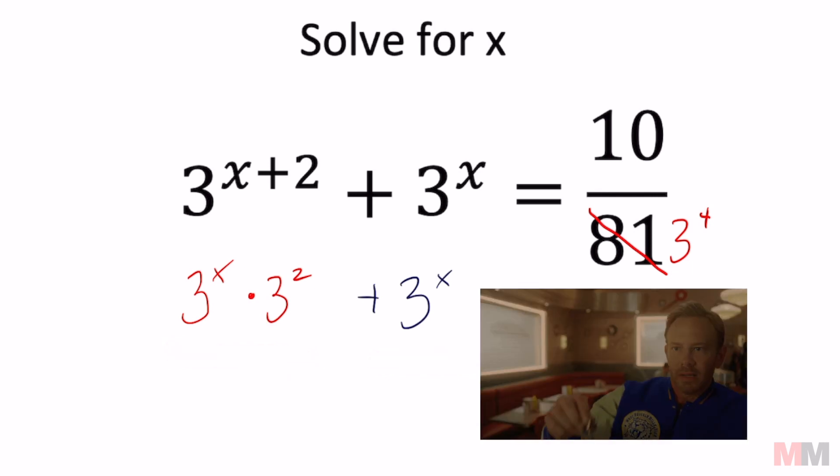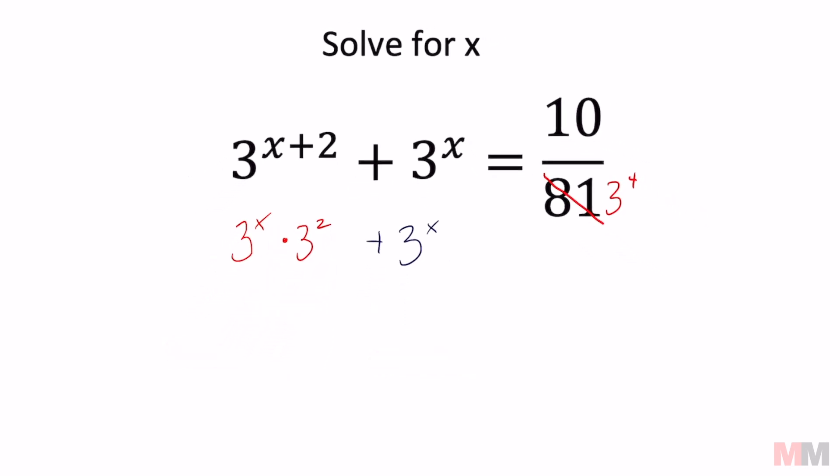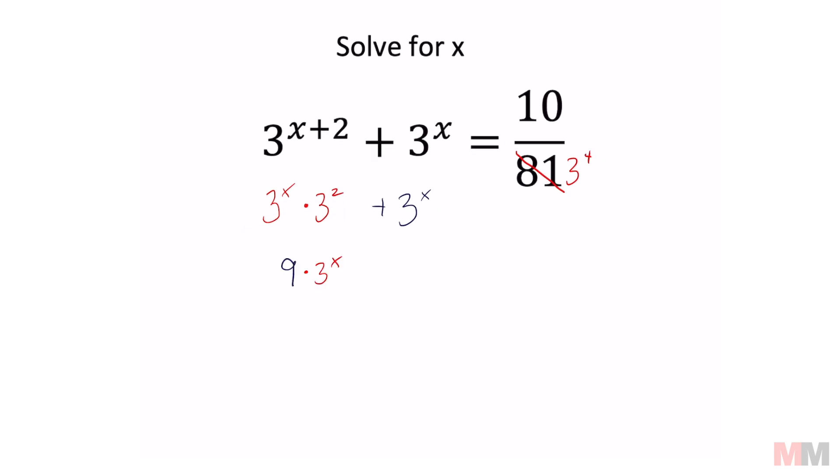And here's the key to the problem right here. If you do 3 squared, 3 squared equals 9. We're just going to drop down the rest of the expression. And believe it or not, this we can combine.